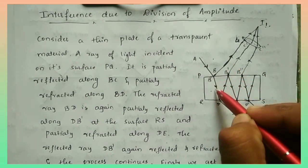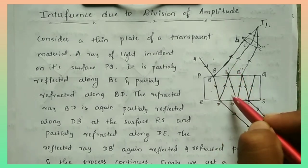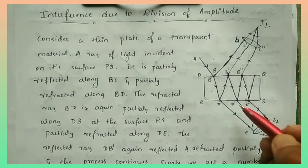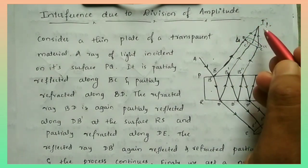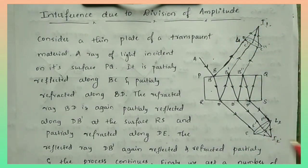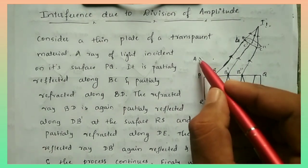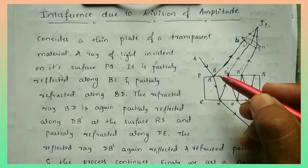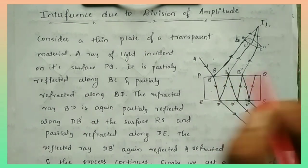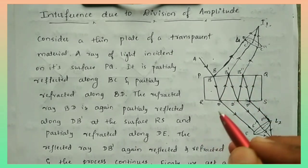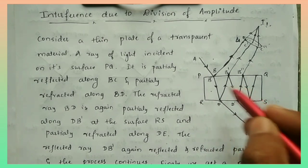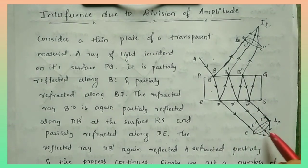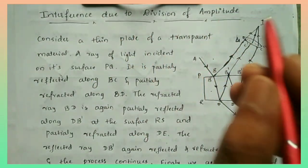The interference due to division of amplitude is the process of dividing the amplitude of an incoming wave into two or more parts through reflection and refraction. These divided parts produce parallel beams, which combine to give the interference pattern.